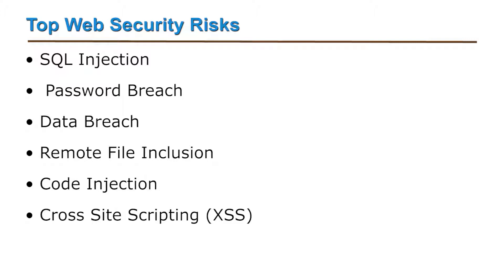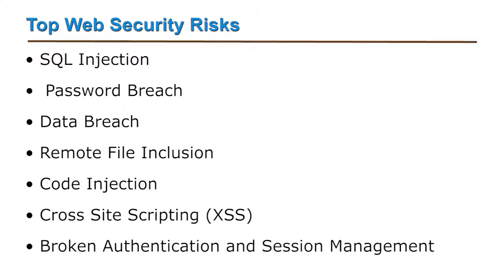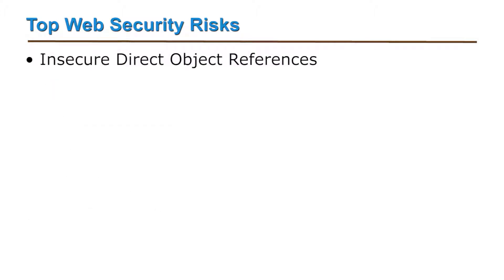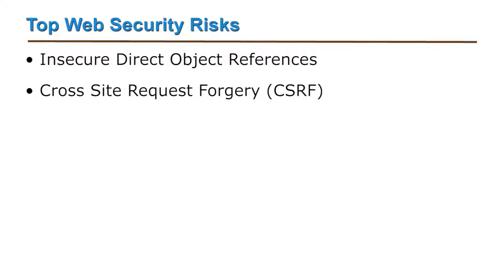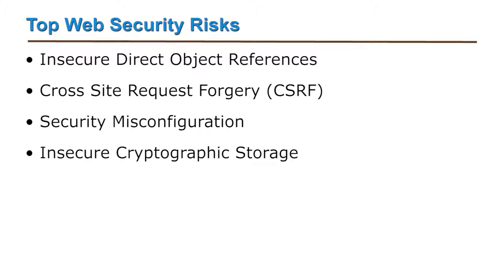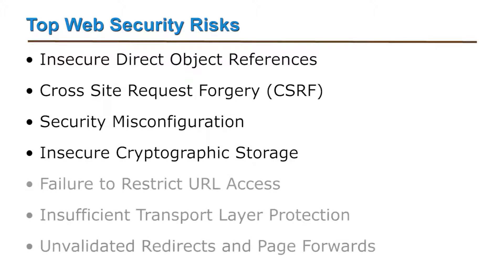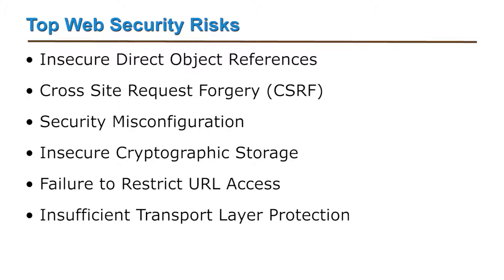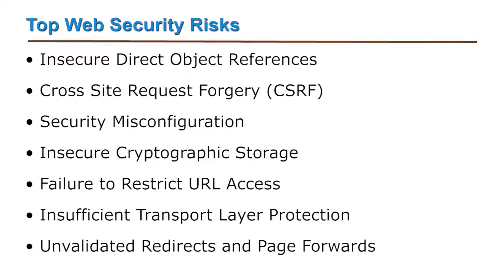Cross-site scripting, in short, we call it XSS. Seventh, broken authentication and session management. Eighth, insecure direct object references. Ninth, cross-site request forgery, CSRF. Tenth, security misconfiguration. Eleven, insecure cryptographic storage. Twelve, failure to restrict URL access. Thirteen, insufficient transport layer protection. And fourteen, unvalidated redirects and page forwards.